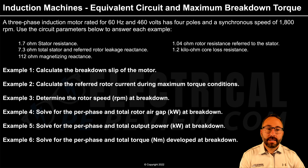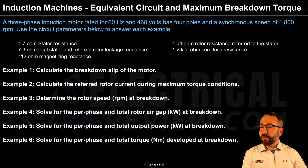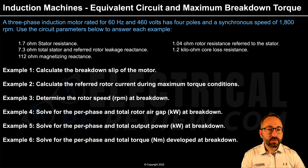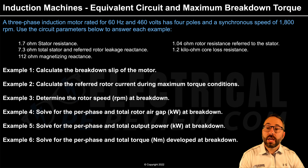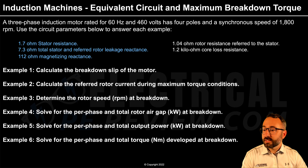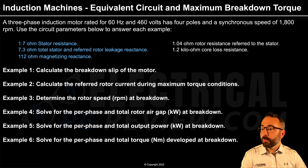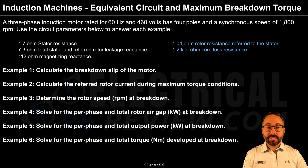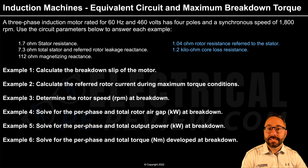Induction Machines — Equivalent Circuit and Maximum Breakdown Torque. This is going to be a 3-part video. A 3-phase induction motor rated for 60 Hz and 460 V has 4 poles and a synchronous speed of 1,800 RPMs. Use the circuit parameters below to answer each example: 1.7 ohm stator resistance, 7.3 ohm total stator and referred rotor leakage reactance, 112 ohm magnetizing reactance, 1.04 ohm rotor resistance referred to the stator, and 1.2 kilo-ohm core loss resistance.